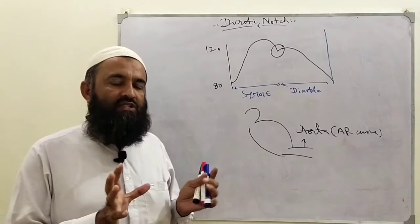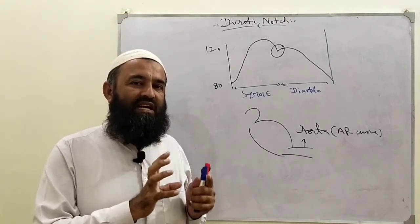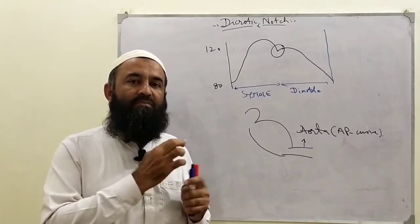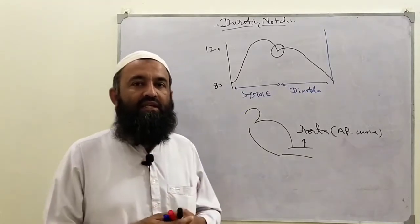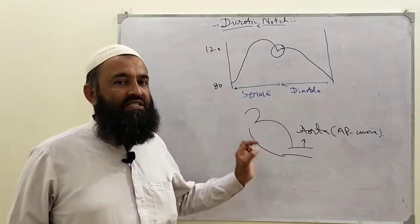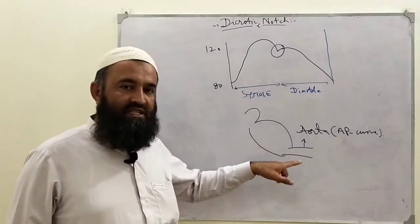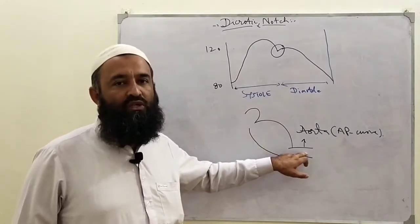The cardiac cycle is from one beat to the next beat. Inside the heart, certain repeated changes occur again and again. One of these changes is the change in pressure inside the aorta during the cardiac cycle.